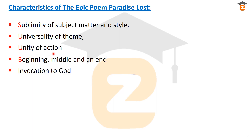Unity of action is related to all the events and stories described in this epic poem — they are all connected with one another. There is no story unconnected from the others; they have a genuine and logical connection. That's why it has unity of action, which is an important characteristic of this epic poem.